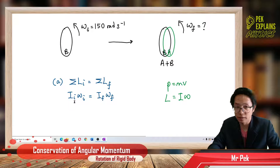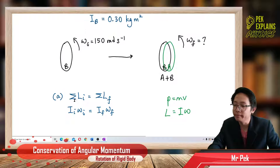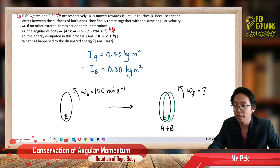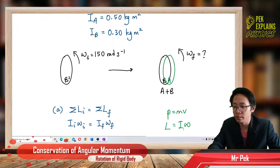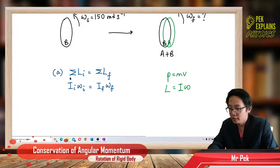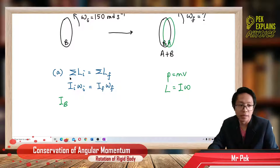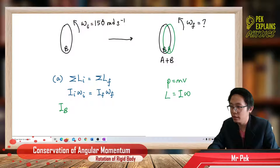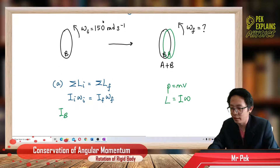Initially, what is rotating? Which one has the momentum? A is not rotating — initially it is only B. So I initial is IB, and omega initial is 150.